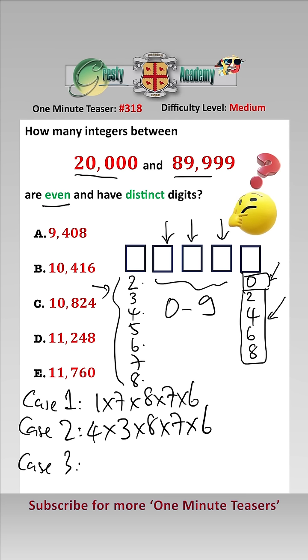And case 3 is if we have an odd number here and 2, 4, 6, or 8, then we have 4 choices for this one. We again have 3 choices here: 3, 5, or 7. And here we have again 8, times 7, times 6.